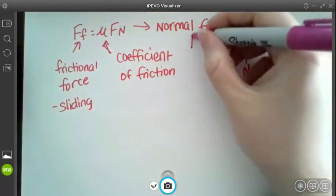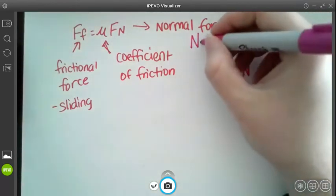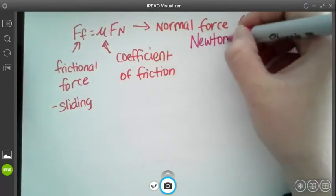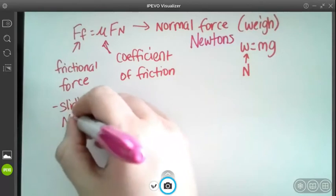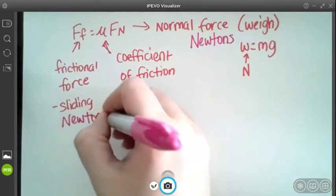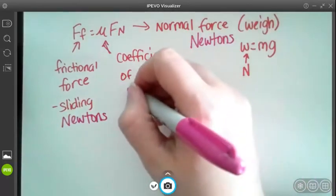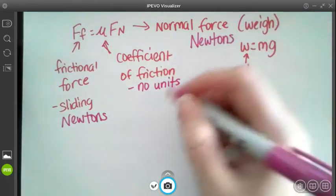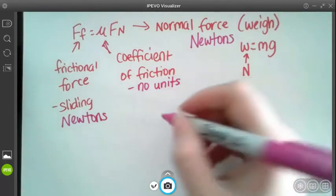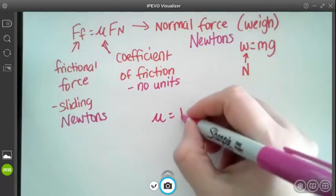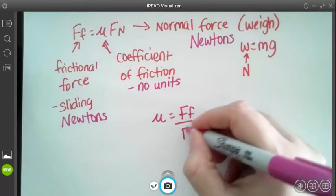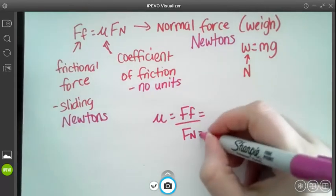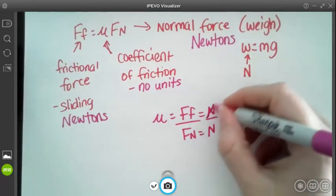So let's go over units really quick. So force is always in newtons. Coefficient does not have a unit, the coefficient of friction, and that's because the formula to find the coefficient of friction is mu equals frictional force over normal force and if you have N for both of those they're going to cancel out and leave you with no units.